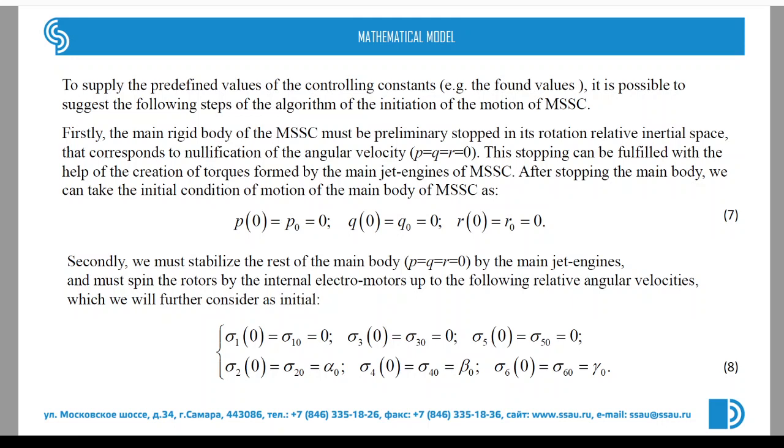The first step is the following: we must stop the main body of the spacecraft relative to the inertial space, and then the components of angular velocity P, Q, R will equal zero. This is expressed in equations 7.